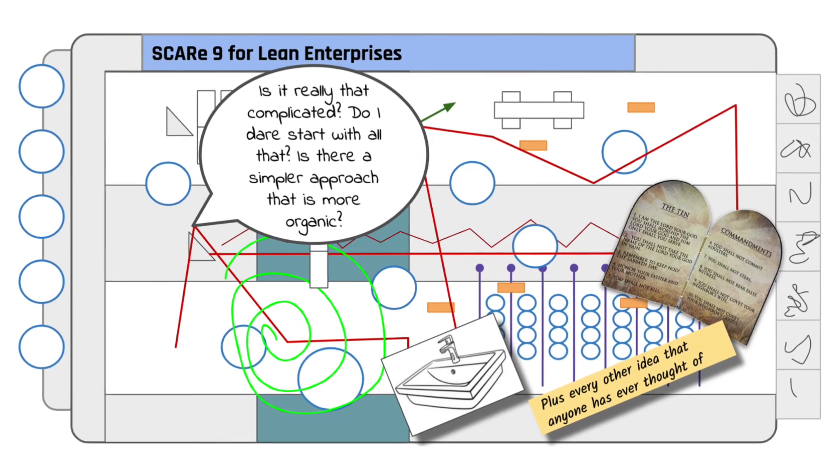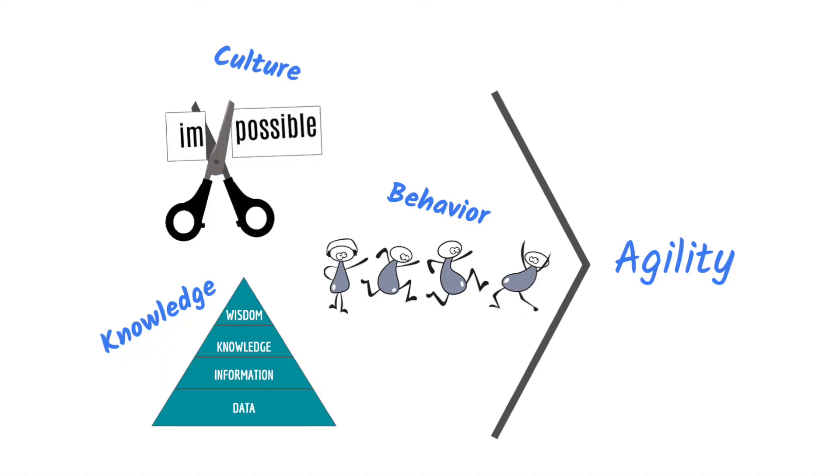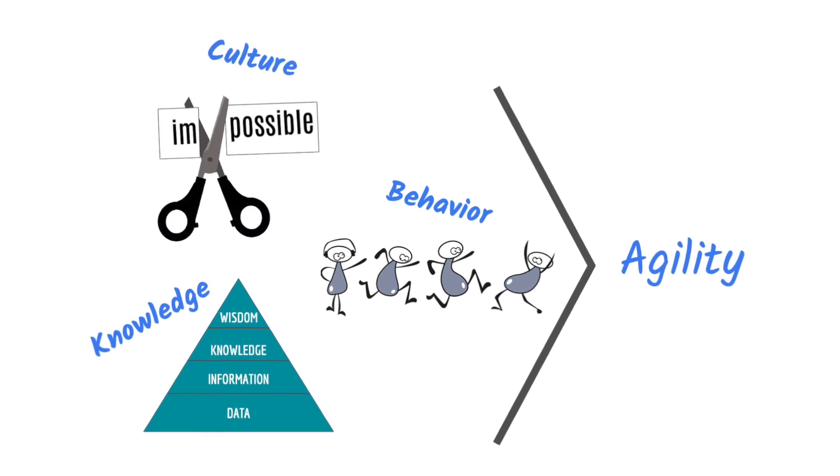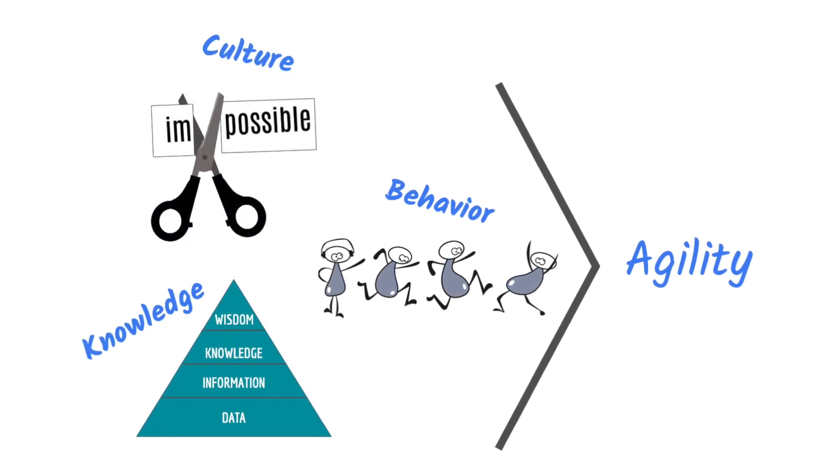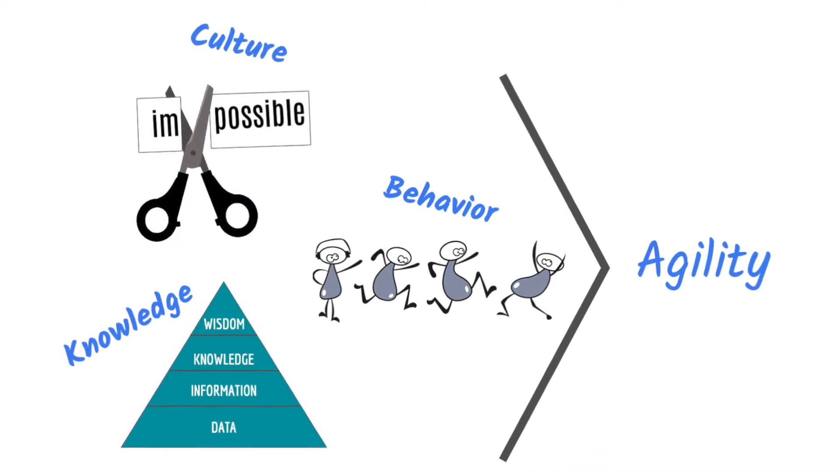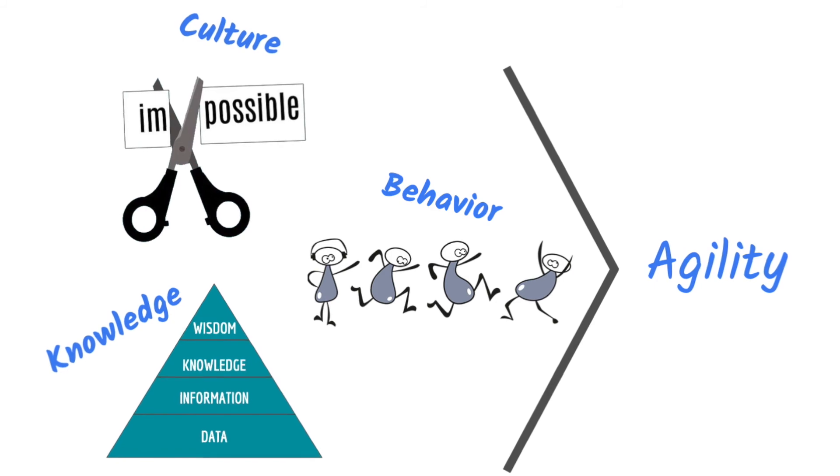So instead of being mired in complexity and still not attaining agility, imagine if you could actually change the DNA of how people work by adjusting cultural traits, behavioral norms, and arming people with new knowledge. Imagine if you could really attain agility. Imagine you would be unstoppable.